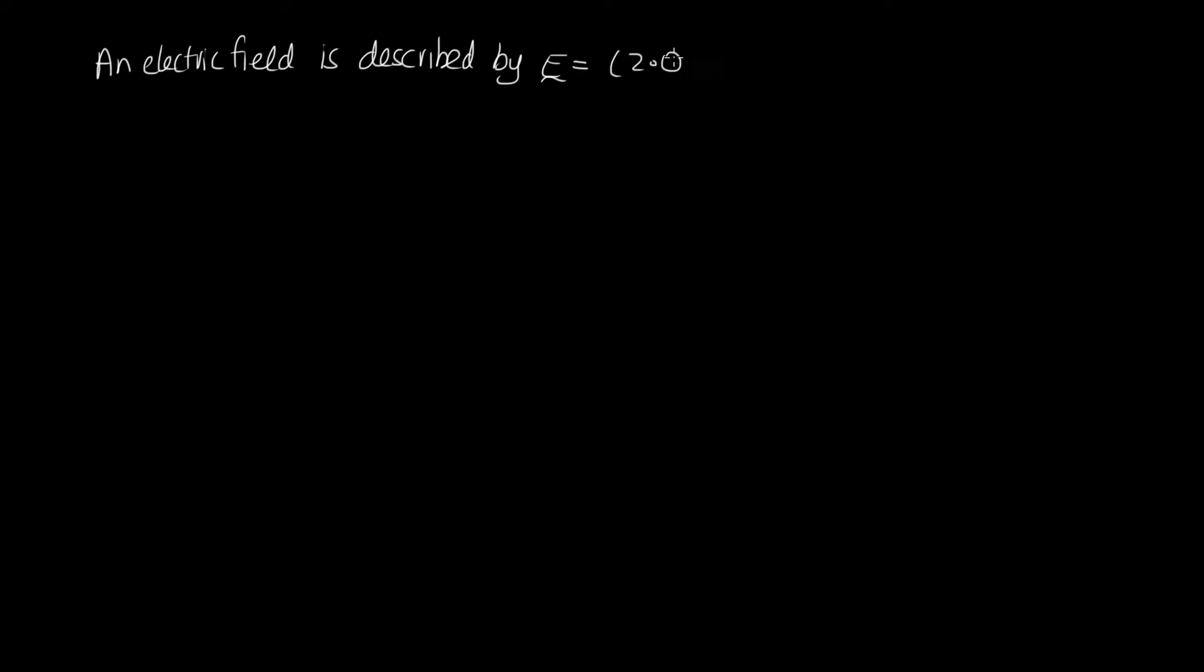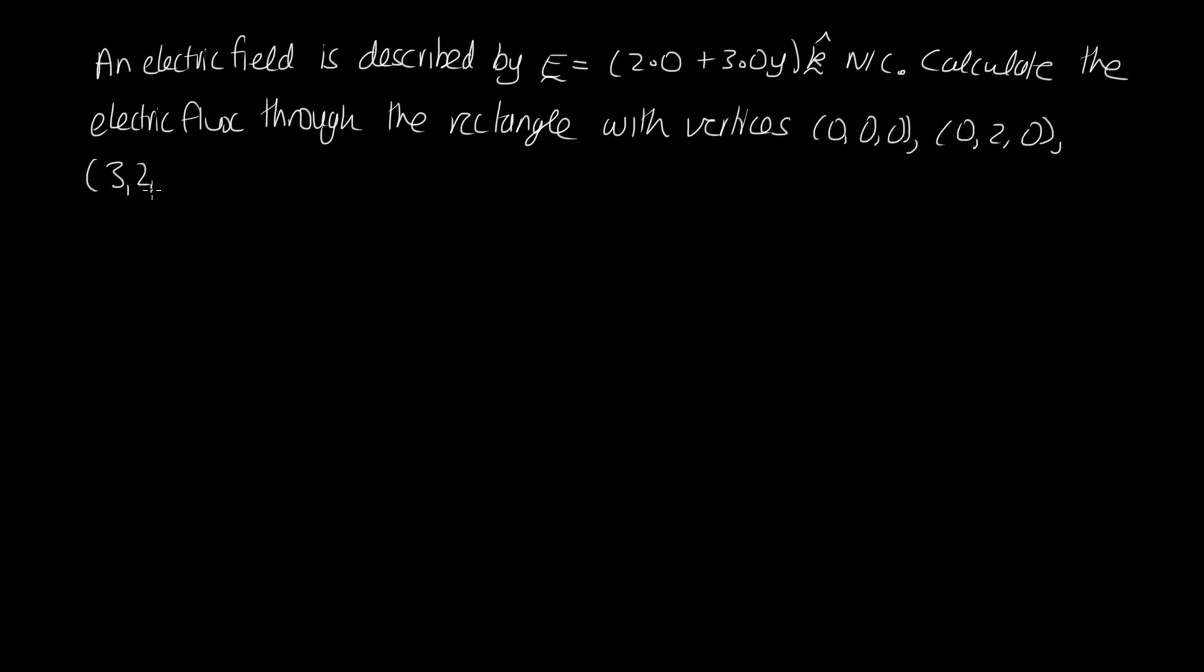So the second example problem is an electric field is described by E is equal to (2+3y)k newtons per coulomb. Calculate the electric flux through the rectangle with vertices (0,0,0), (0,2,0), (3,2,0) and (3,0,0). Okay, so the best way to start this question is as always to draw a diagram.